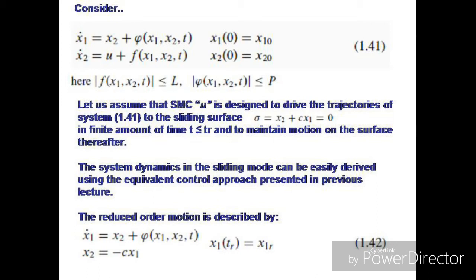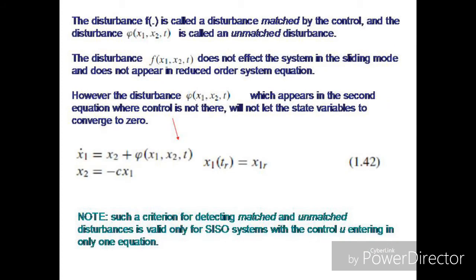Another reduced-order motion is given by equation 1.42. By applying the sliding mode control u, the order of the system reduces — it was initially a second-order system, now it becomes a first-order system. In this first-order system, we still have the disturbance phi (function of state variables and time). The disturbance f has been eliminated, but the disturbance phi is still present, which was in the equation where we did not have control. The disturbance f is called a matched disturbance.